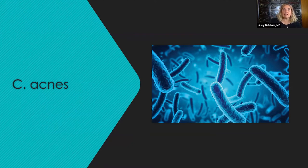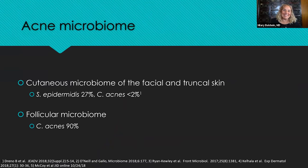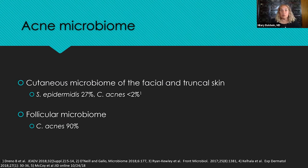Now let's move on to C. acnes. That story is a very big story. We're talking about the microbiome here. We have two microbiomes to consider. The first is the cutaneous microbiome of the facial and truncal skin, where we see mostly Staph. epidermidis with just a smattering of C. acnes. But in the follicle — the follicular microbiome, where all the action is — it's almost entirely C. acnes, with a smattering of Malassezia furfur and some other organisms.